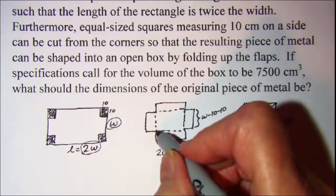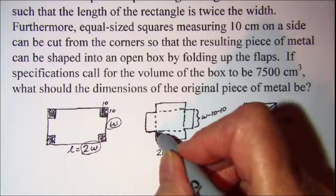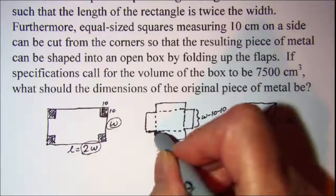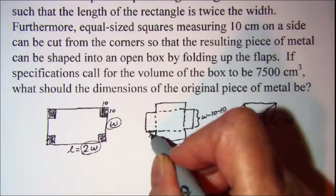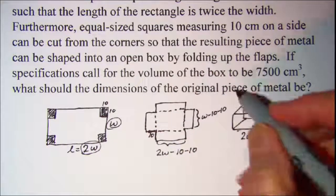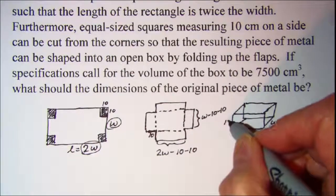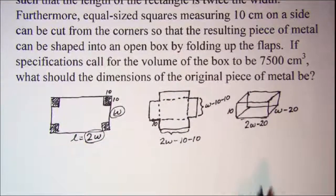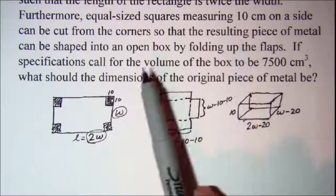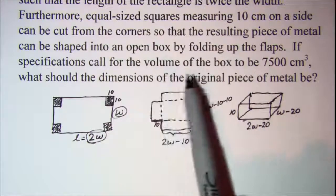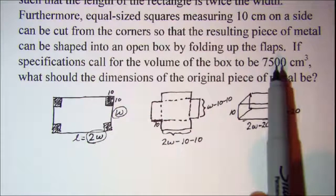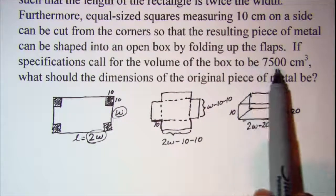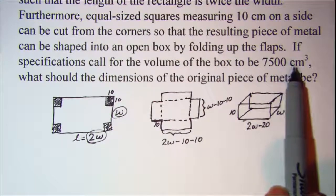And when I fold this box up, the height of the box — this dimension right here — is a constant 10 cm. The only other thing from the wording of the problem is that the volume of the box has to be 7500 cm³.